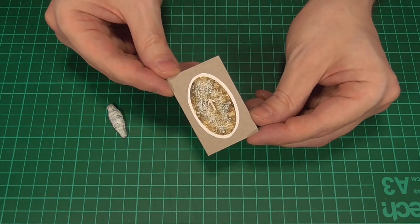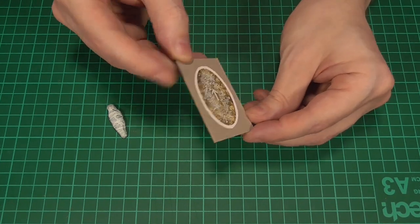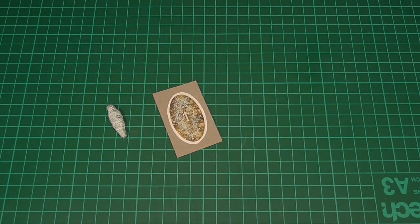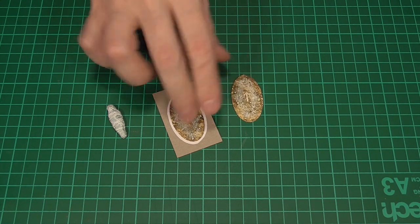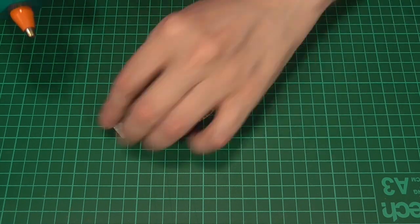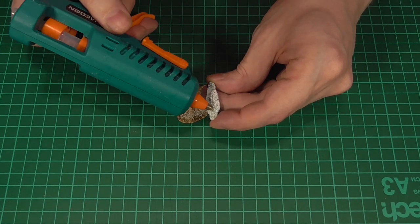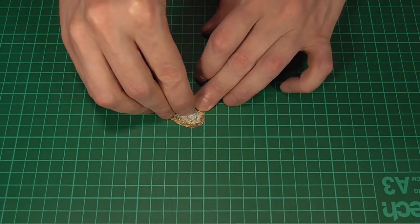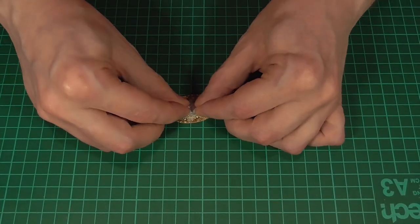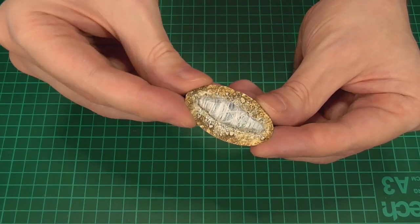Anyway, next we'll glue one of the oval bases to some more thick card, and cut that to size. There you go. Then it's just a simple matter of hot gluing the cocoon to the base, and it works best if you have the head facing in the same direction as the arrow.